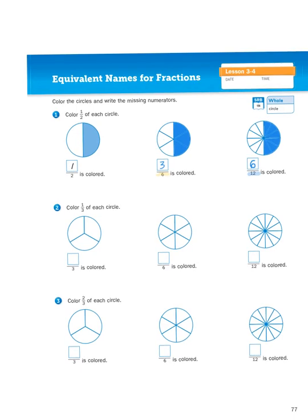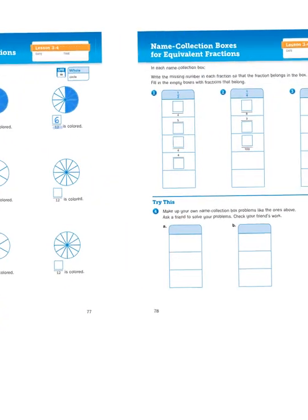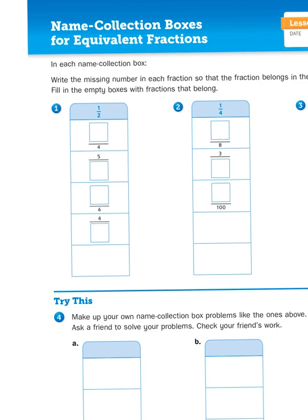You can do the problems for number two and number three on your own — it's pretty easy. These pictures will help us visualize equivalent fractions in the next activity: the name collection boxes for equivalent fractions. You've probably seen name collection boxes before for whole numbers. For example, you'd get a number like 20 and think of all the ways to arrive at it — ten plus ten, four times five, or twenty-one minus one would all give you twenty.